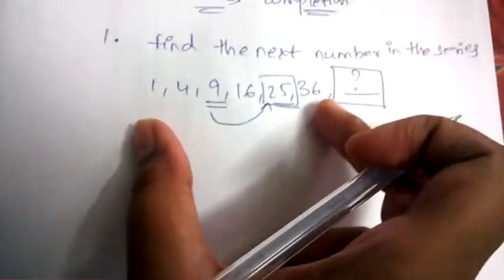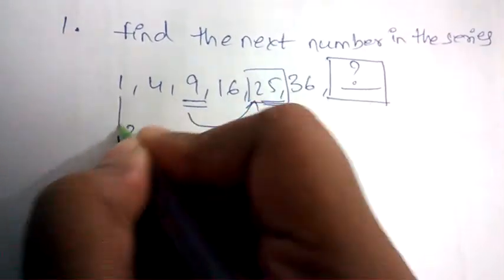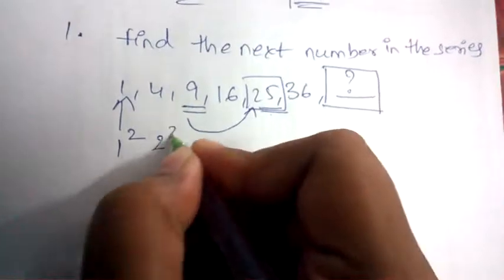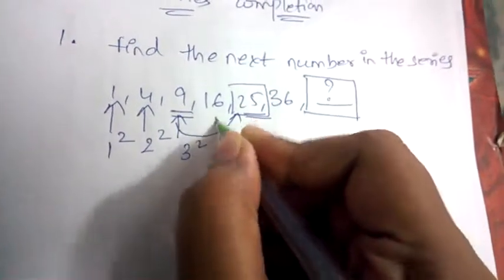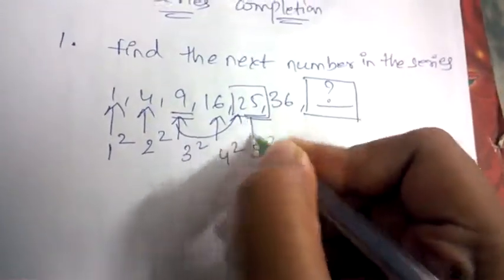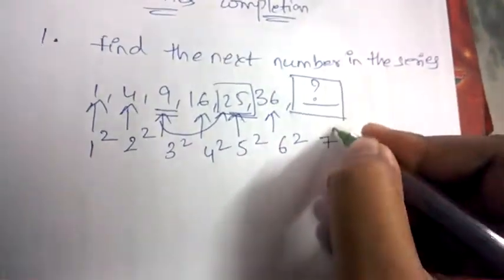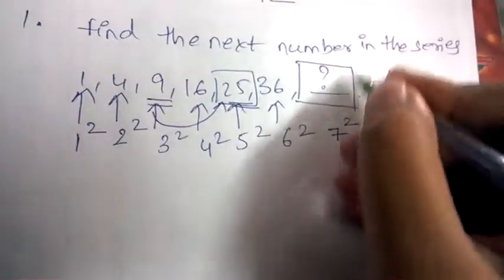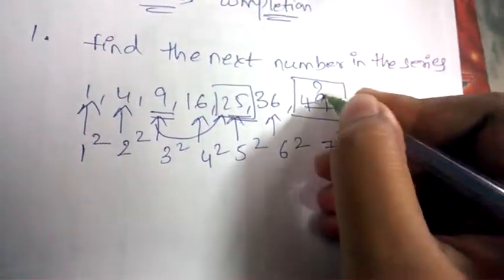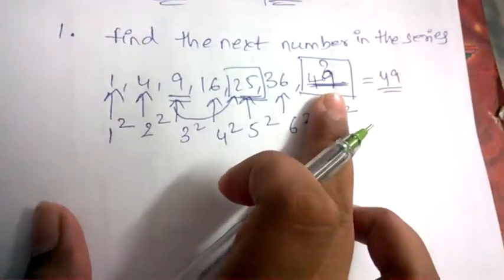Let's analyze: 1² = 1, 2² = 4, 3² = 9, 4² = 16, 5² = 25, 6² = 36. So automatically the next term will be 7² = 49. The number which comes in that position is 49.